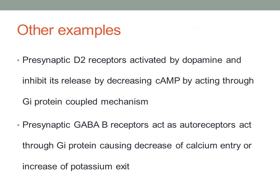Other examples include presynaptic D2 receptors, which when activated by dopamine inhibit their own release by acting through a Gi-coupled mechanism, causing a decrease in cAMP. Similarly, presynaptic GABA-B receptors also act as autoreceptors, again acting through Gi protein and decreasing cAMP, decreasing calcium entry, or increasing potassium.